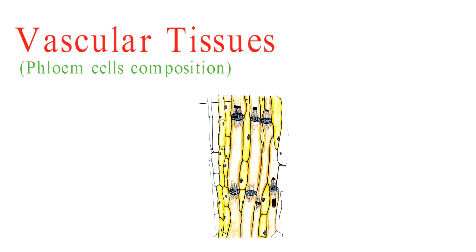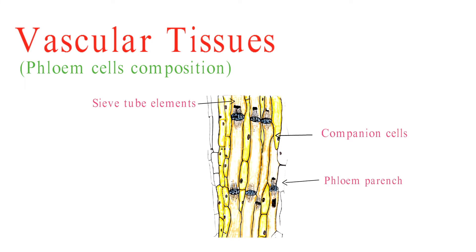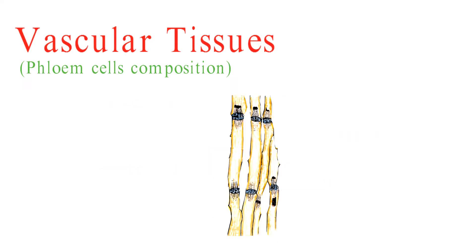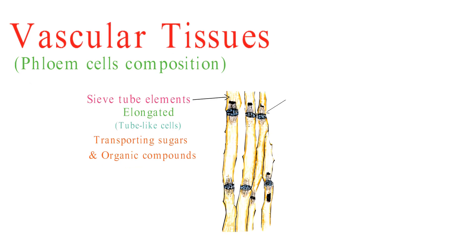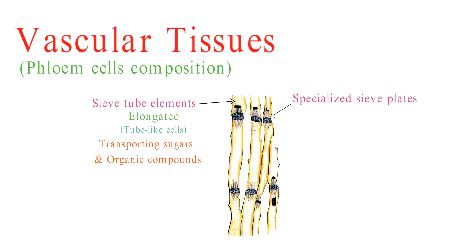Phloem consists of sieve tube elements, companion cells, phloem parenchyma, and phloem fibers. Sieve tube elements are the main functional cells of the phloem. They're elongated, tube-like cells that form the conduits for transporting sugars and other organic compounds throughout the plant. These cells have specialized sieve plates with perforations that allow for the movement of nutrients between cells.